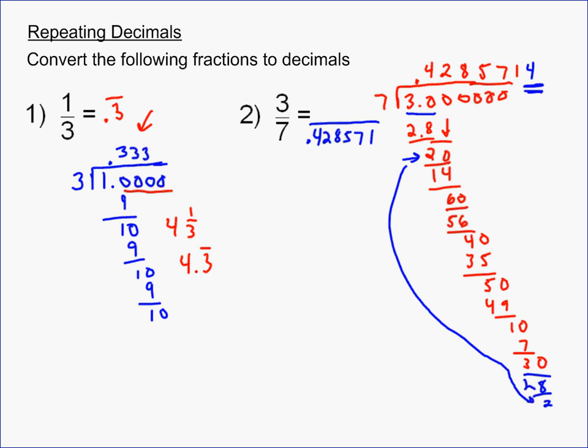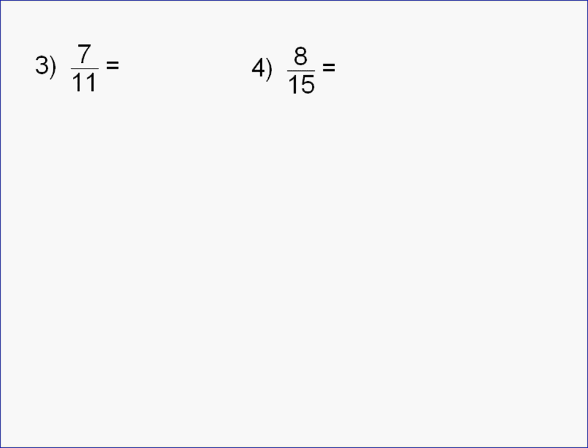Okay, two more examples of this, common examples. 7 over 11. This is a very common one. How many times does 11 go into 7? Well, put in your 0s. 11 goes into 70 six times. That gives you 66.